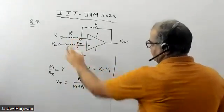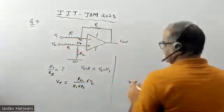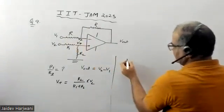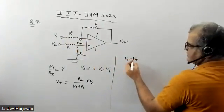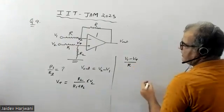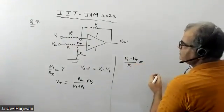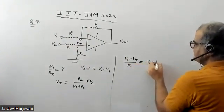If I apply KCL now, I can write V1 minus V+ upon R is equals to V+ minus V output.